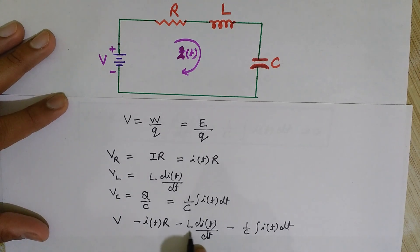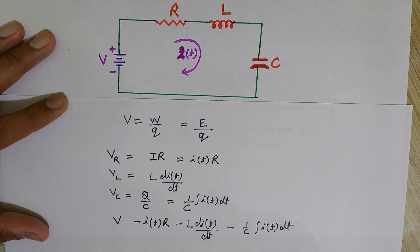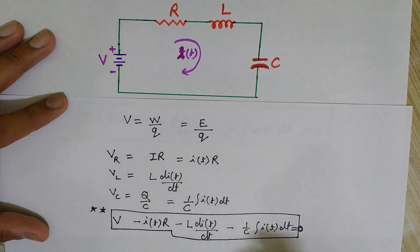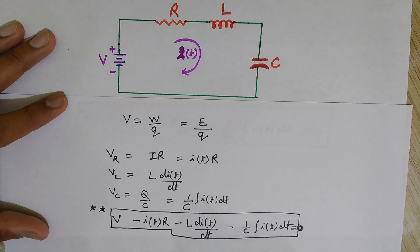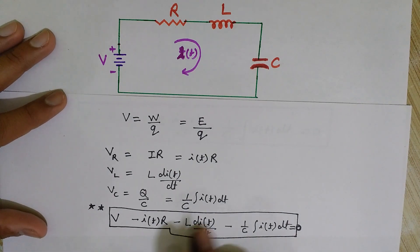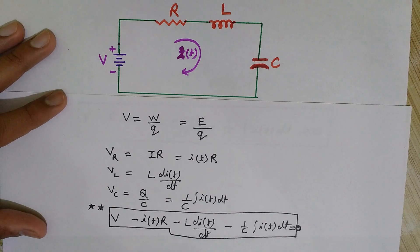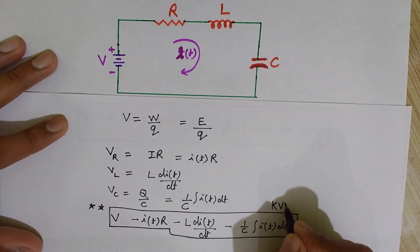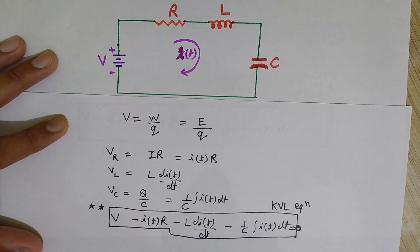So our KVL equation is: V minus IR minus L dI/dt minus (1/C) integral of I(t) dt equals zero. This equals zero because the net potential drop must be equal to zero in this closed electrical circuit. This is our KVL equation for this RLC circuit.